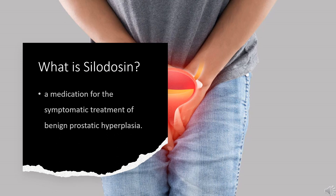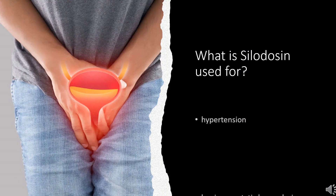What is silodosin? Silodosin, sold under the brand name URIF among others, is a medication for the symptomatic treatment of benign prostatic hyperplasia. It acts as an alpha-1 adrenergic receptor antagonist.